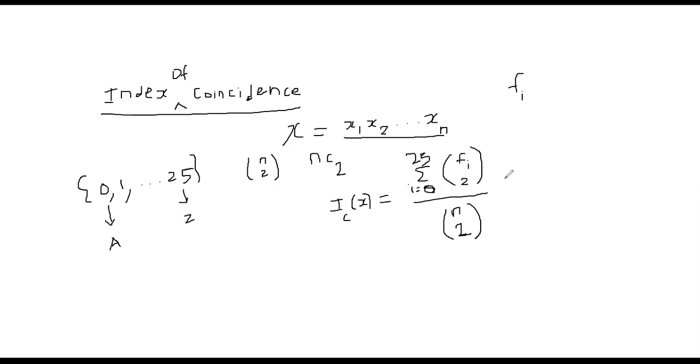And why did I do f_i C2 or f_i choose two? Because we wanted to choose two elements and they must be identical. So we are only interested in identical elements. That's because in probability we put here all possibilities in the denominator, in the numerator we choose the events that are of interest for us.